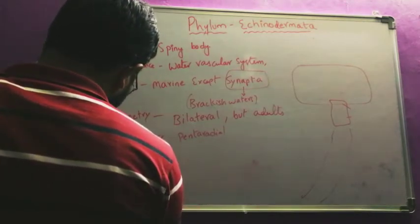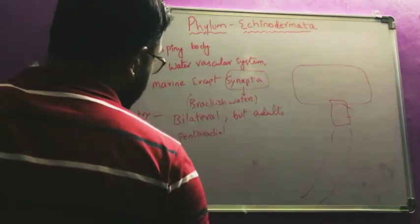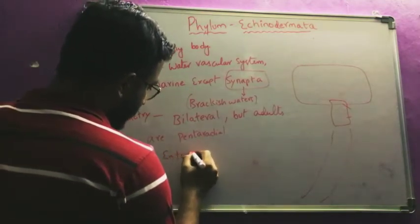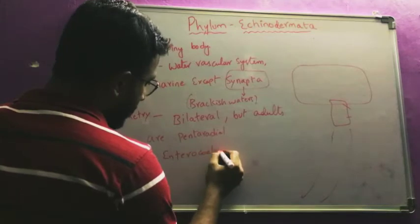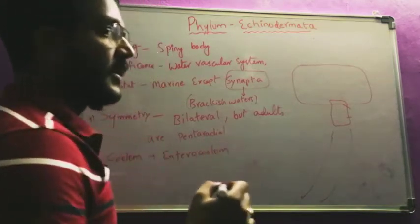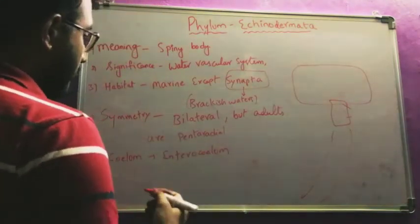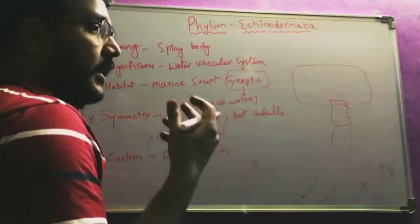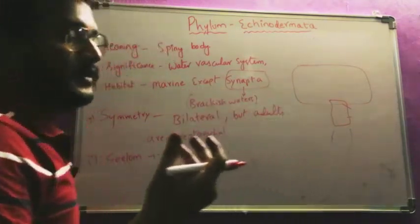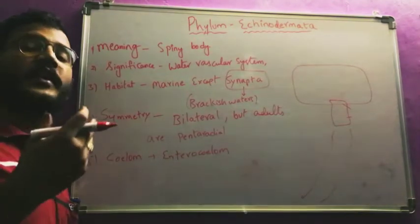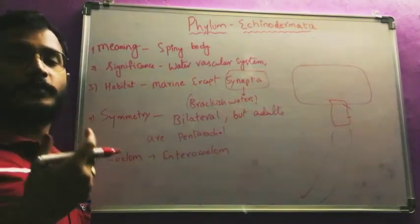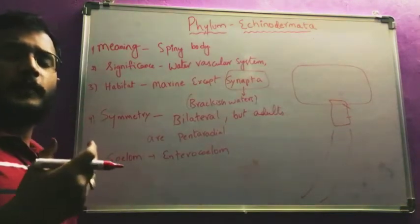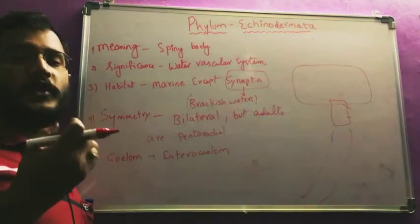Echinodermata also exhibits a true coelom. However, it is not the schizocoelous type seen in Annelida, Arthropoda, and Mollusca — it is an enterocoelous type, formed from archenteron pouches, which we discussed in detail in the coelom chapter. The coelom is formed from the splitting of mesodermal blocks.